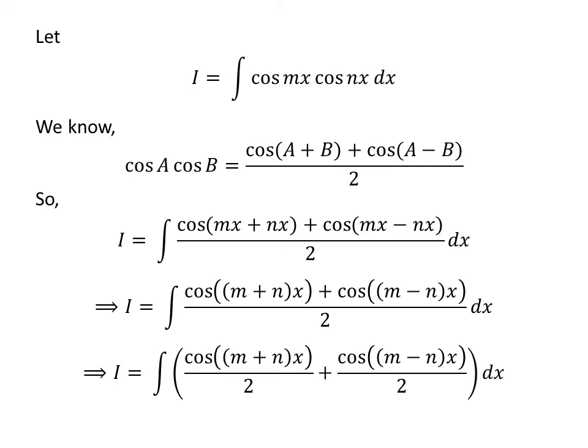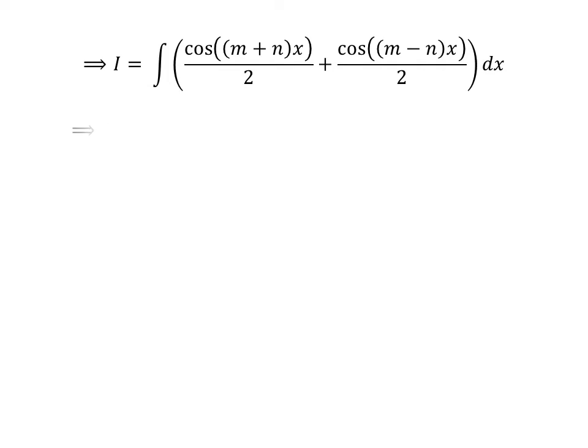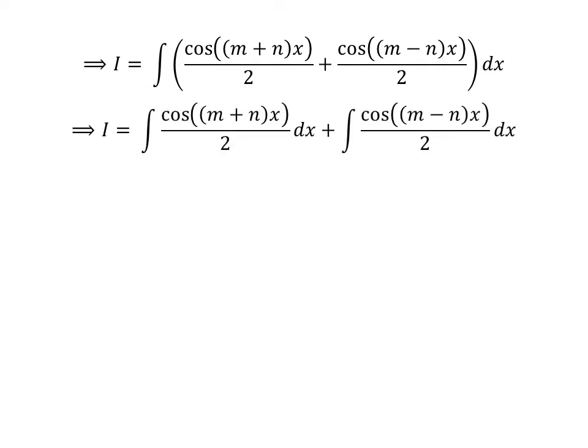The integrand can be expressed as a sum of two fractions. Application of the linearity property of integrals gives us I is equal to the integral of cosine of (m+n)x upon 2 with respect to x, plus the integral of cosine of (m−n)x upon 2 with respect to x.